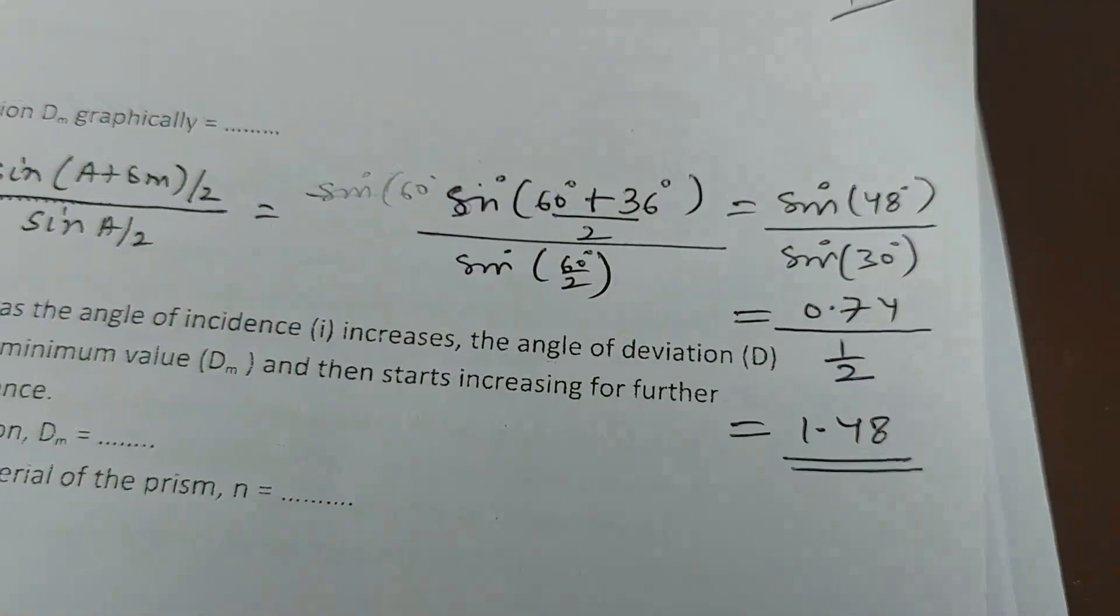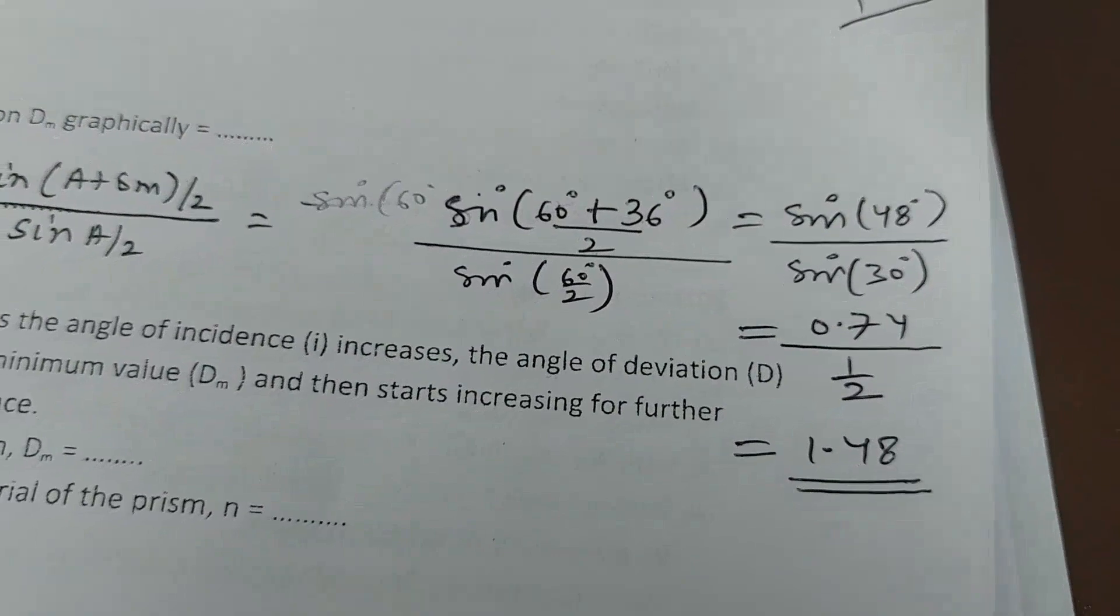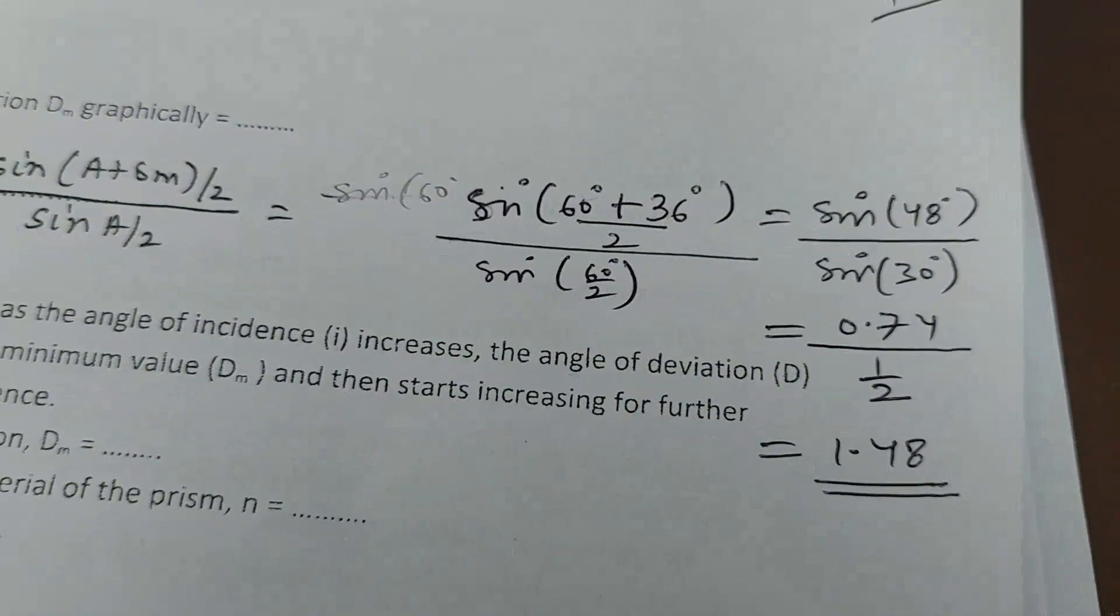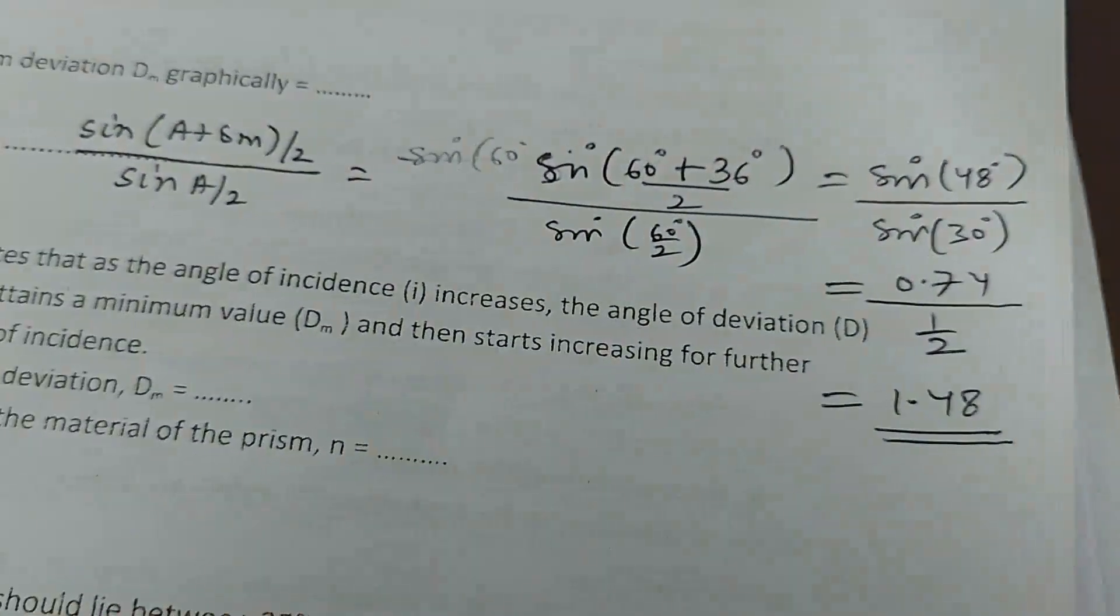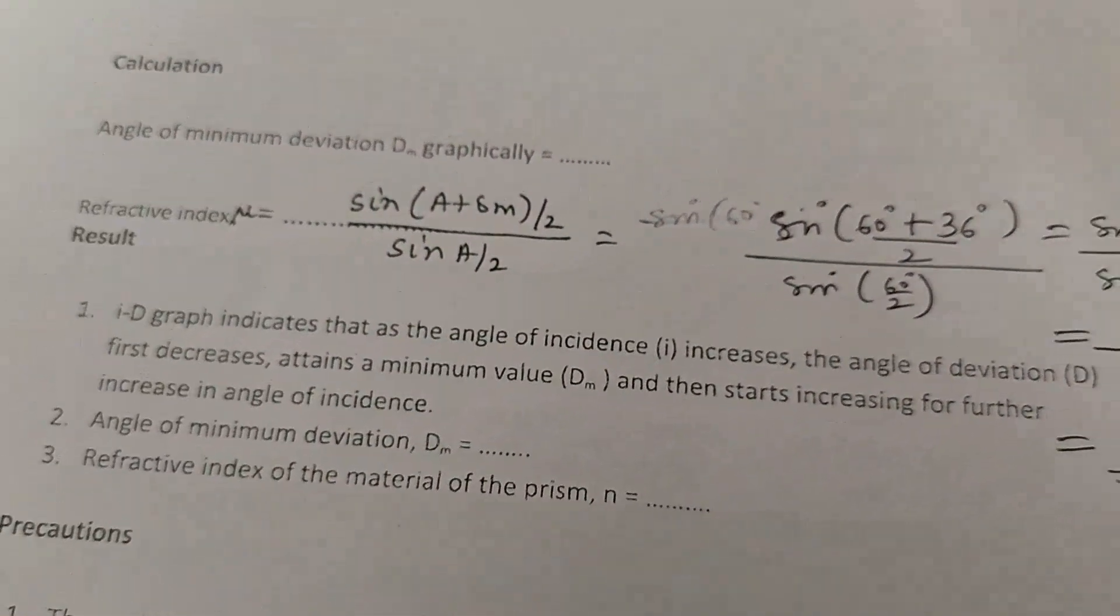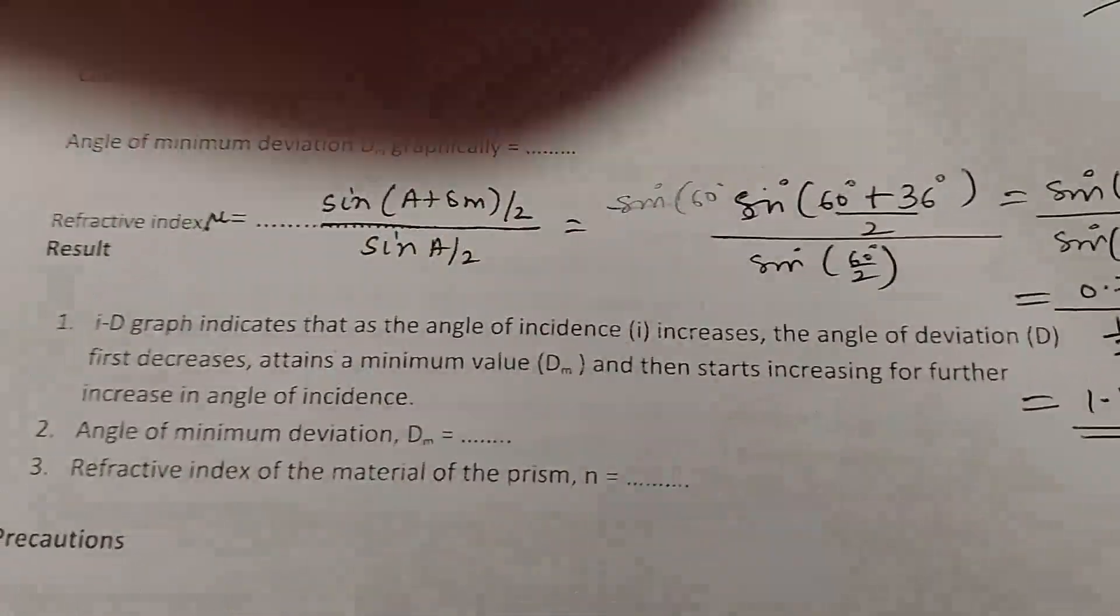From there, if you see the value of 48 degrees, it is 0.74, and sin 30 is half. Multiplying the two, what we get is 1.48. This is a perfect result because this prism is made up of glass and the refractive index of glass is nearly 1.5.